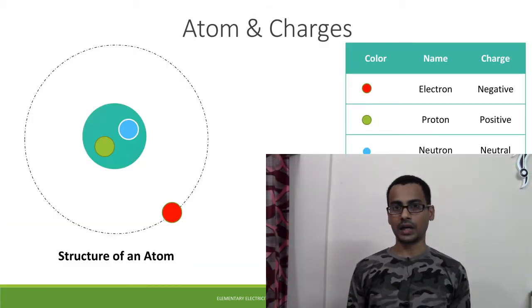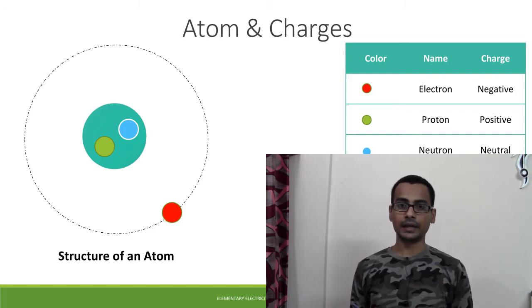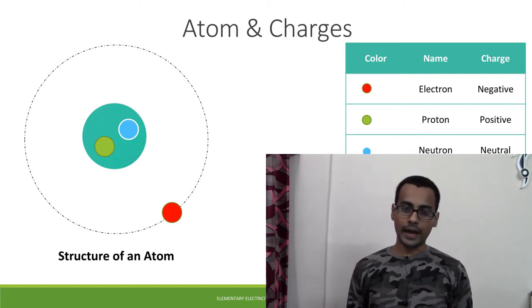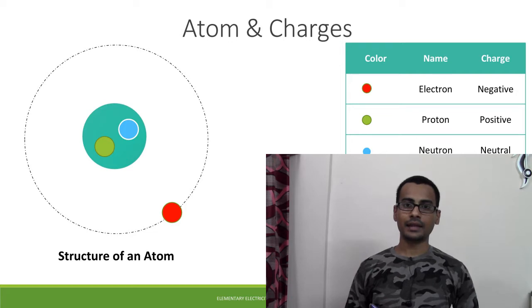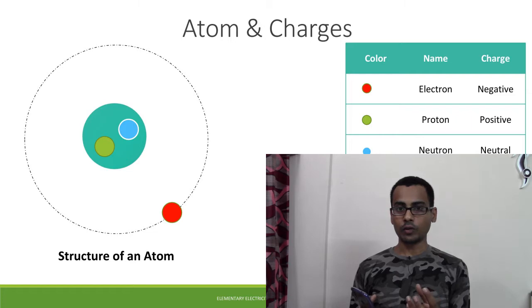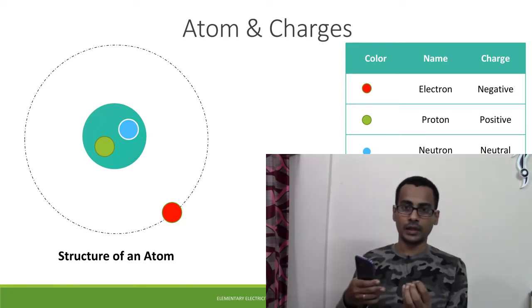To understand what charge is, we will have to go very deep into matter. When you take any matter and keep dividing it finely, you will ultimately end up with a very small particle called an atom. The atom consists of three particles: the proton, which is the positively charged particle; the neutron, which is neutral; and the electron, which is negatively charged. The proton and neutron form the nucleus, and the electrons revolve around it.